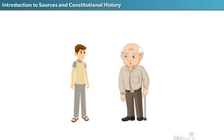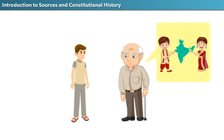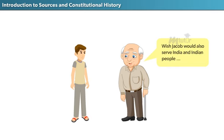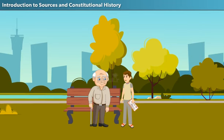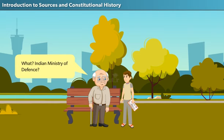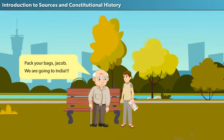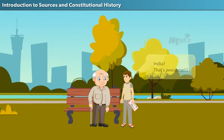Jacob grew up hearing his granddad's stories about the pride of India and Indian people. Jacob also knew his granddad's secret wish — for him to serve the Indian people just as Sam had done. One day, Sam Daniel received an invitation from the Indian Ministry of Defense to participate in the forthcoming Republic Day and the Beating the Retreat celebrations. Sam Daniel and Jacob were really excited, and together the family planned to spend three months' vacation in India.